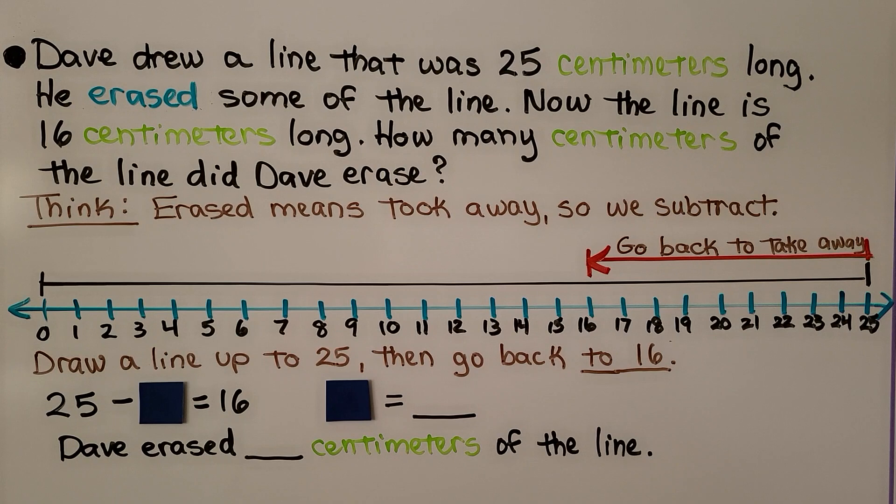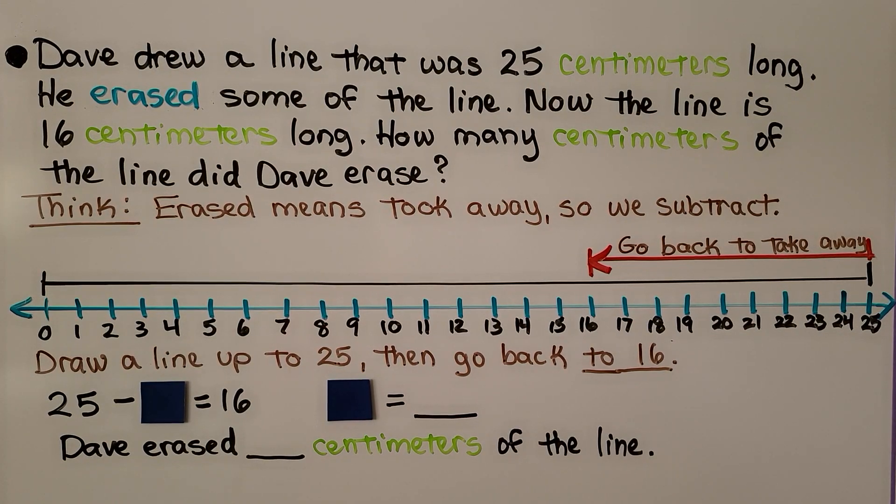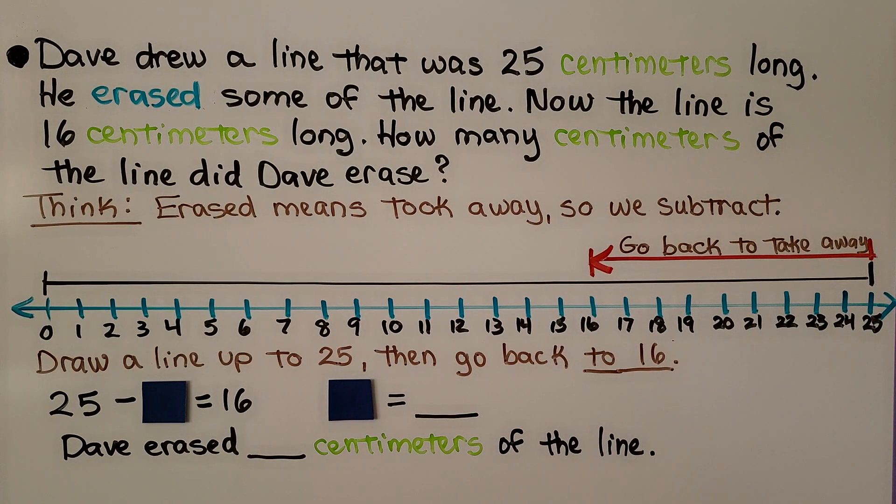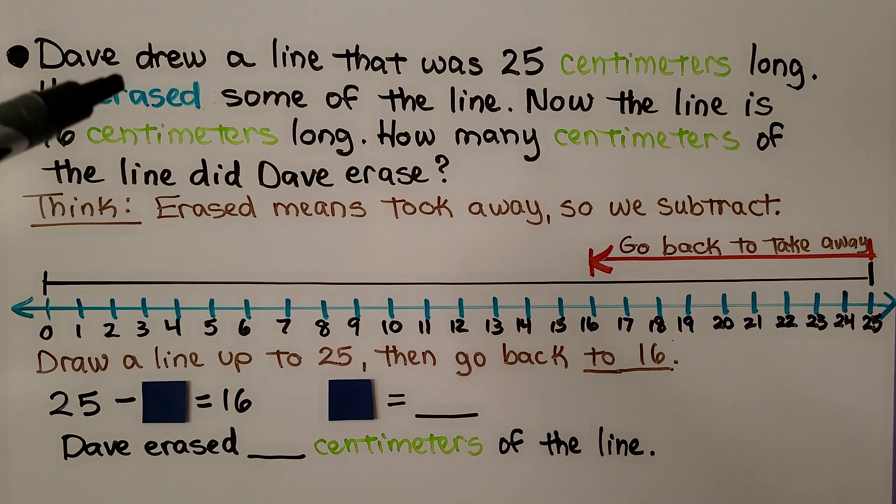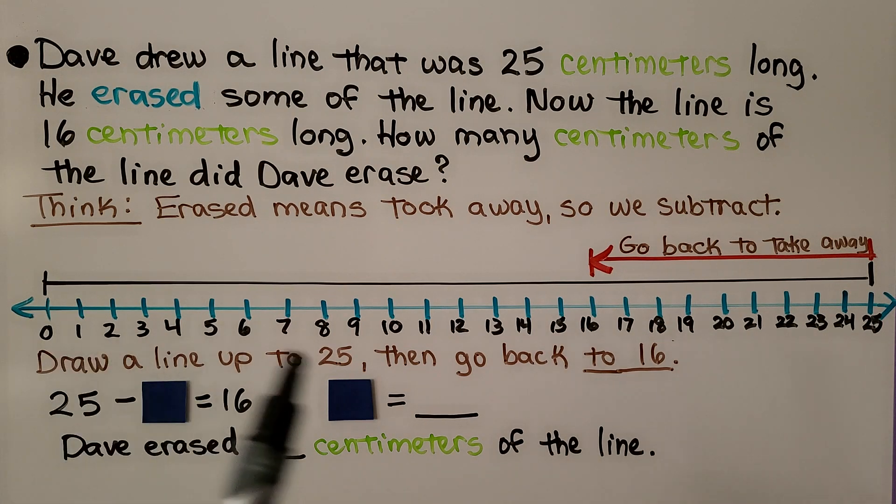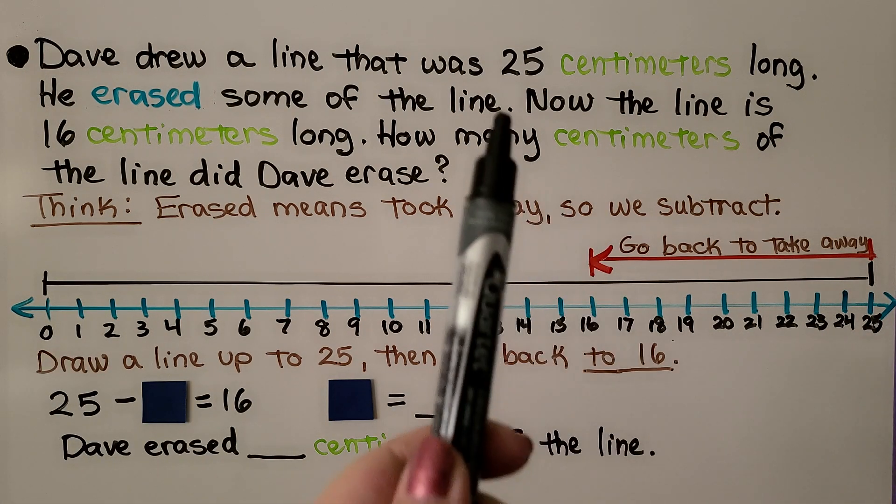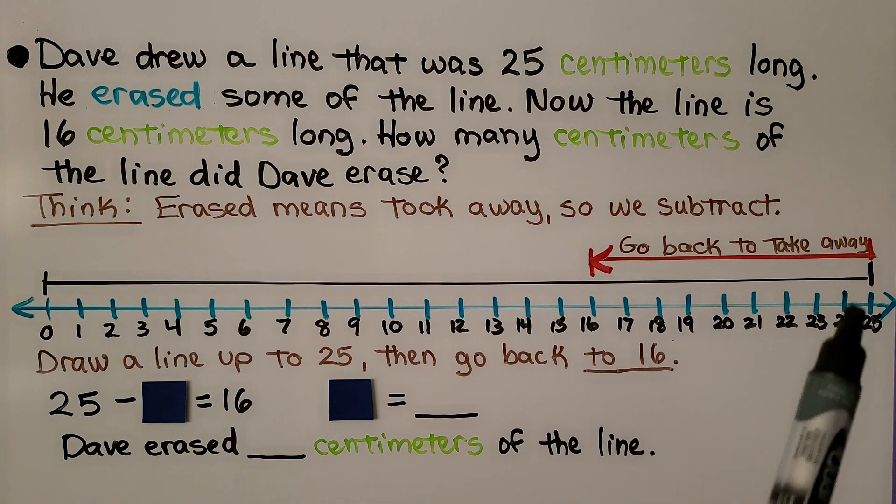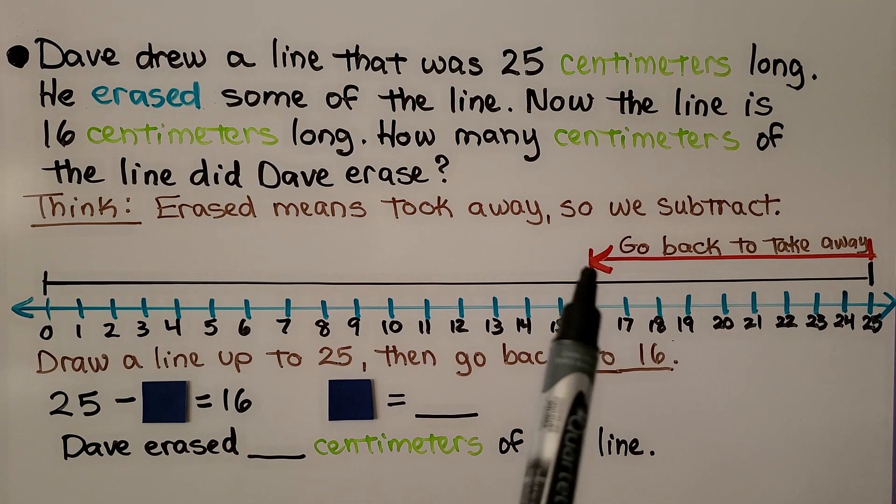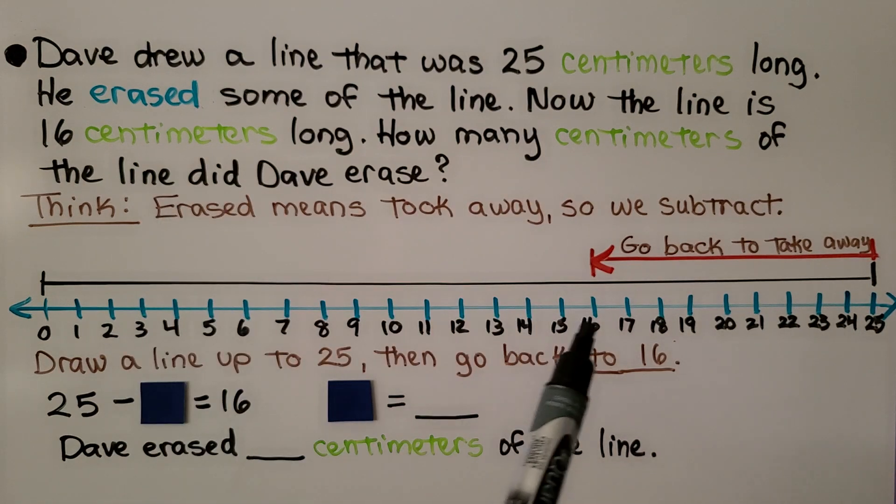Dave drew a line that was 25 centimeters long. He erased some of the line. Now the line is 16 centimeters long. How many centimeters of line did Dave erase? We think. Erased means took away, so we're going to subtract. We draw a line up to 25, because that's how long he drew his line. Then we go back, because now the line is 16 centimeters long. We go back to 16. Then we count how many we went back.